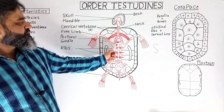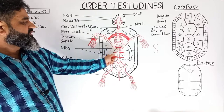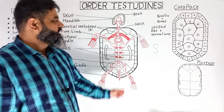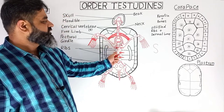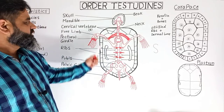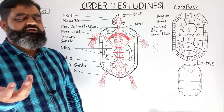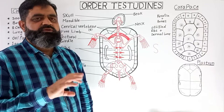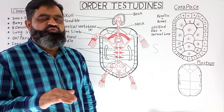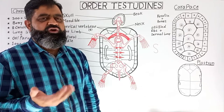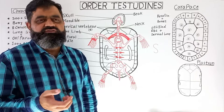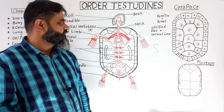Just posterior to the cervical vertebrae is a region known as the pectoral girdle, similar to all other vertebrates, where four limbs are attached. There are two limbs on the left and right side. The forelimbs include the humerus, radius, ulna, carpals, metacarpals, and phalanges, forming feet for walking on land in tortoises, or flipper-like structures in sea turtles which allow them to swim in water.